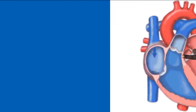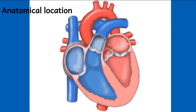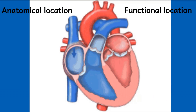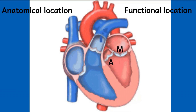The first thing to know is the anatomical location of the valves — which valves are on the left and which are on the right. On this diagram, you'll see that the left-sided valves are the mitral valve and the aortic valve. The right-sided valves are the tricuspid valve and the pulmonary valve.